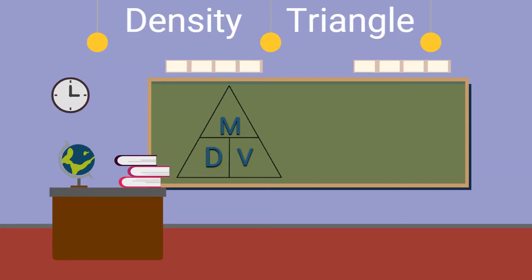Once you have the density triangle drawn, just simply cover up the letter of the variable you're trying to find, and what is left will represent your formula.